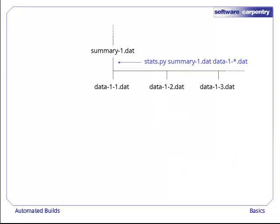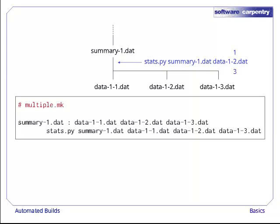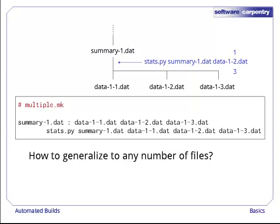Let's go back to our paper and look at another part of our dependency graph. Summary1.dat depends on all of the files data11.dat, data12.dat, and so on. The number of files isn't fixed. There could be one, a dozen, or a thousand. Writing a rule for exactly three files is easy. We just have one target and multiple prerequisites on a single line. But how do we generalize that to any number of files?